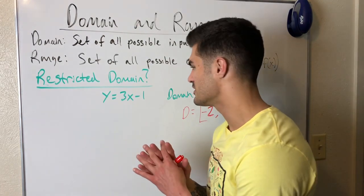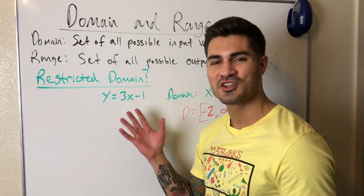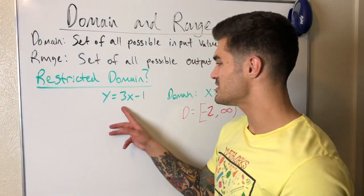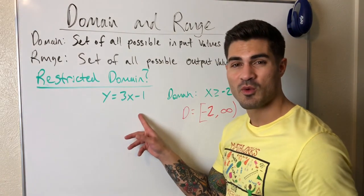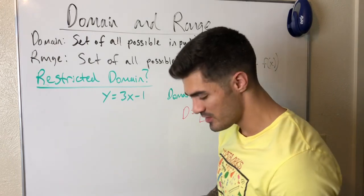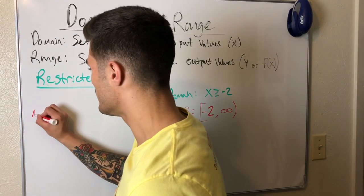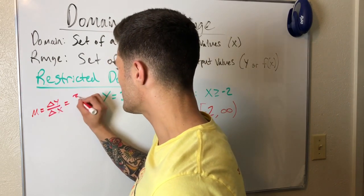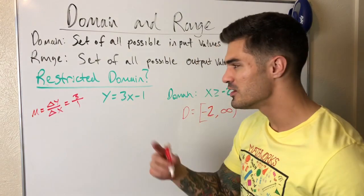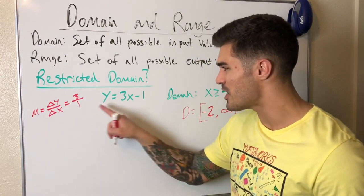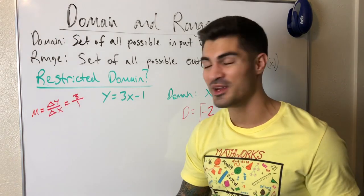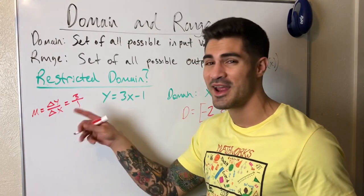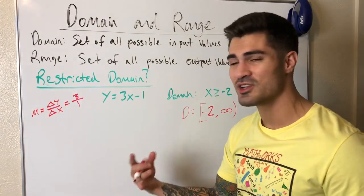We're given this function in y = mx + b form — slope-intercept form. In this case, 3 is the slope and negative 1 is the y-intercept, but we really only care about the slope. Slope means change in y over change in x. Here the slope is 3, written as 3 over 1, meaning when x increases by 1, y increases by 3. So as x increases, y increases — we just want to know if it's increasing or decreasing.